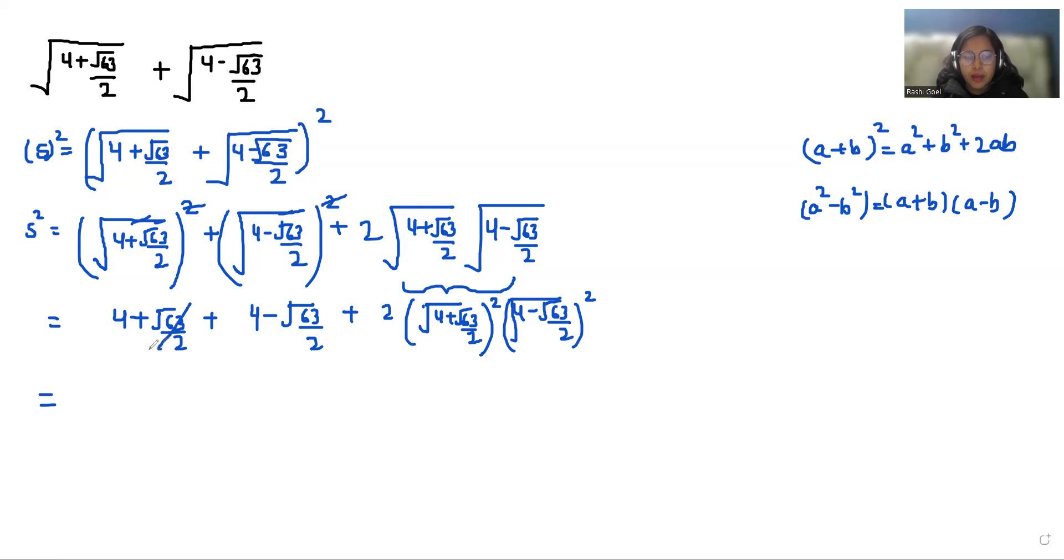Now here we can eliminate this plus and minus, and 4 plus 4 is 8, plus here a² is √4, so 4² is 16